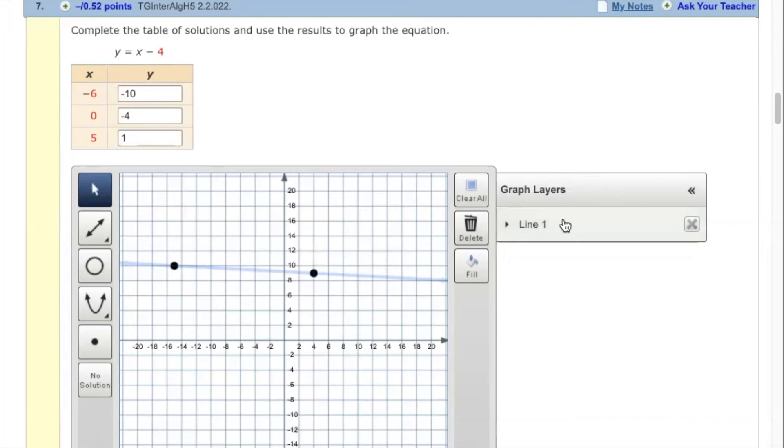If you move over here, the graph layers tells you what's going on in your graph. A lot of times when people ask me questions, I can look over here, and I could see, oh, WebAssign thought you wanted to enter a ray, or a parabola, or something else.